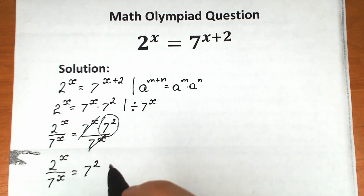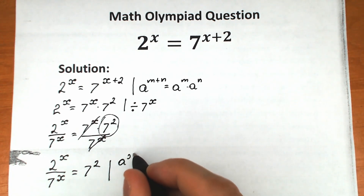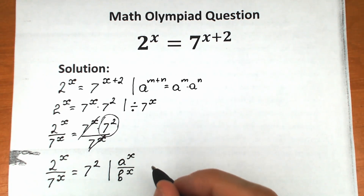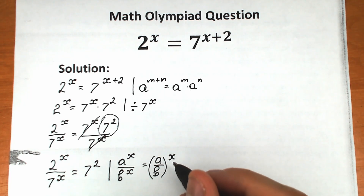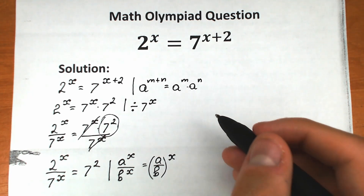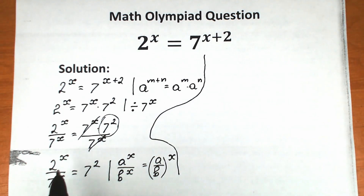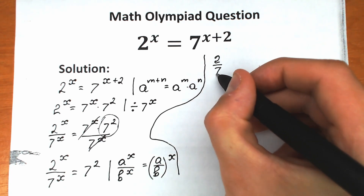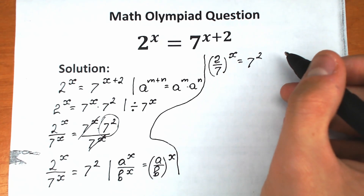We need to apply another key rule here: if we have a to the power x divided by b to the power x — that is, different bases but the same exponent — we can write it as a over b, all raised to the power x. So let's apply this. We get 2 over 7 to the power x equals 7 squared.